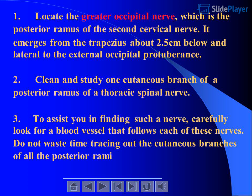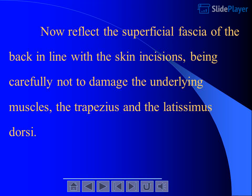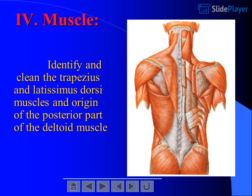Do not waste time tracing out the cutaneous branches of all the posterior rami. Now reflect the superficial fascia of the back in line with the skin incisions, being careful not to damage the underlying muscles, the trapezius and the latissimus dorsi. Muscle: identify and clean the trapezius and latissimus dorsi.